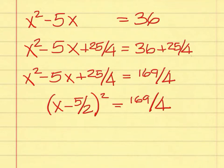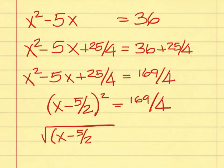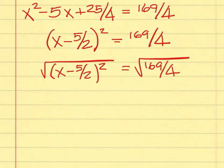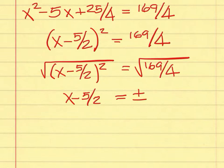You must find the square root of both sides. The square root of the quantity squared of x minus 5 over 2 is just x minus 5 over 2. On the right-hand side, it's going to be plus or minus 13 over 2 — you take the square root of the top and the square root of the bottom.